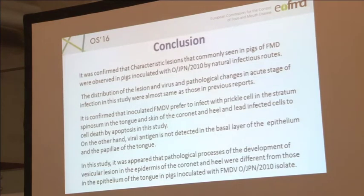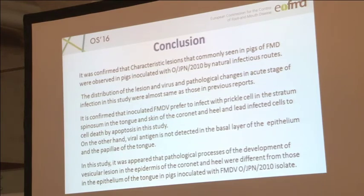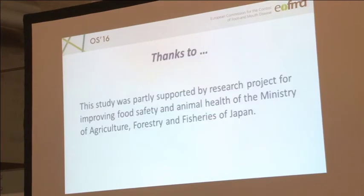In conclusion, characteristic lesions commonly seen in pigs with FMD were observed in pigs inoculated with O JPN-2010 by the intraoral route. It was confirmed that FMDV preferentially infects prickle cells in the stratum spinosum of the tongue and skin of the coronary band and heel, and leads infected cells to death by apoptosis. Interestingly, viral antigen was not detected in the basal layer of the epithelium or in the papillae of the tongue, and the papillae were intact. It has been demonstrated that the pathological processes of vesicular lesion development in the epidermis of the coronary band and heel were quite different from those in the epithelium of the tongue. Thank you very much for your attention.